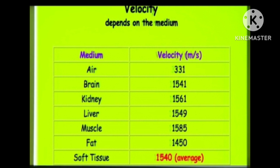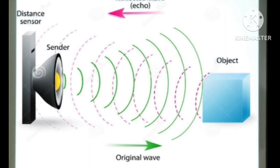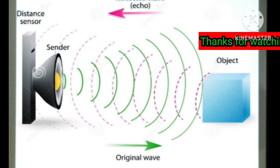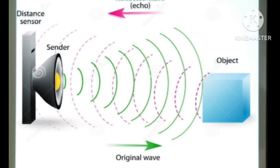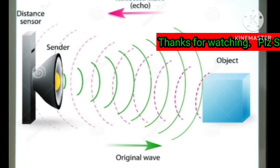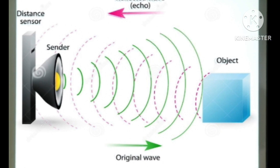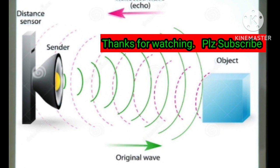Ultrasound works on the pulse-echo technique. Pulse means the original wave produced by the probe or piezoelectric crystal. Echo means the reflected wave from the object back to the probe. Higher the amount of echoes — that is, reflected waves from the object to the probe — higher will be the quality of image.